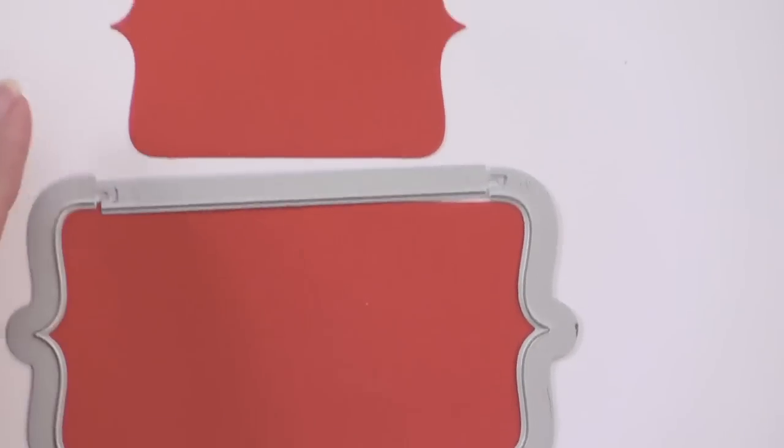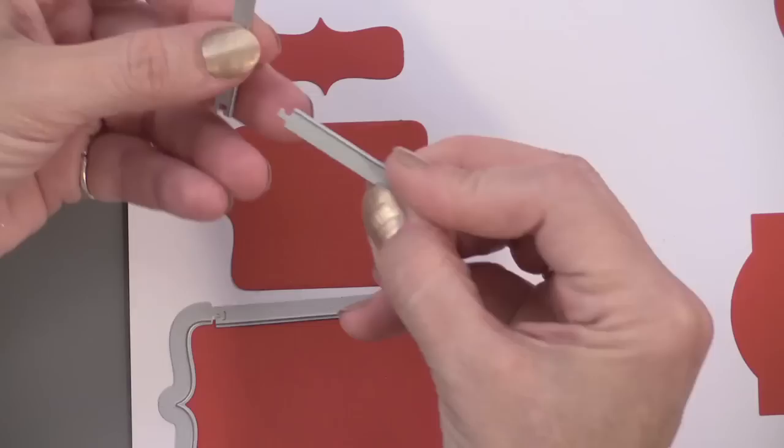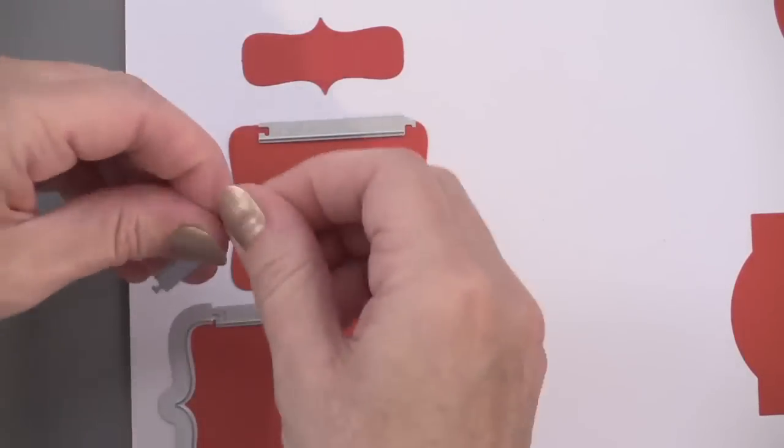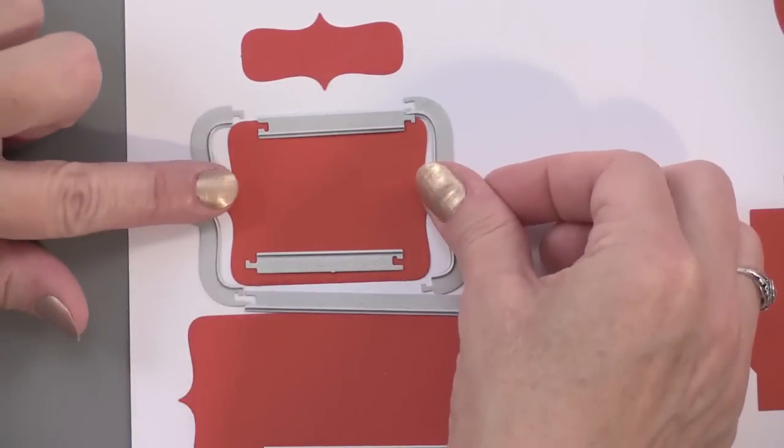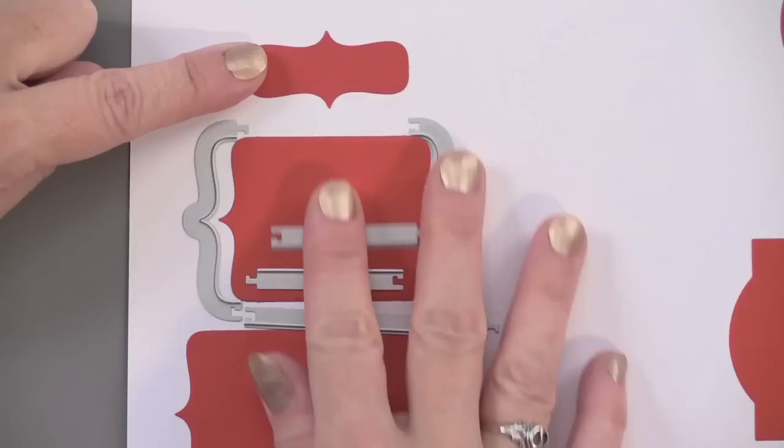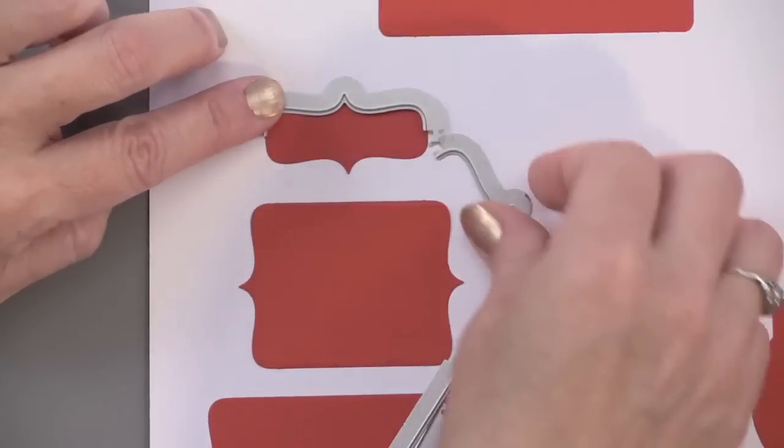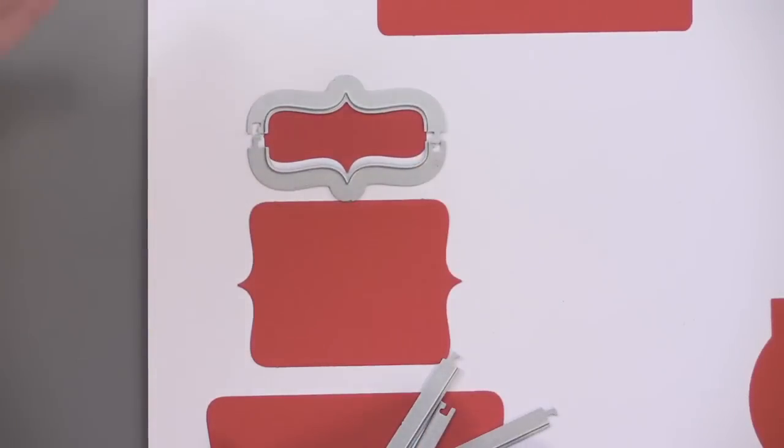So that makes that big one. Now to do the small one, you've got smaller extenders. This one would set here, this one would set here, but I would use the same end pieces. For this one, I didn't use the extenders at all. I just turned this one on its side, and it creates that tiny little label. Very fun.